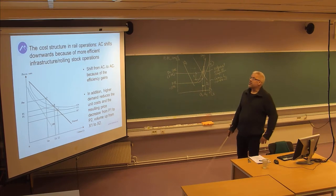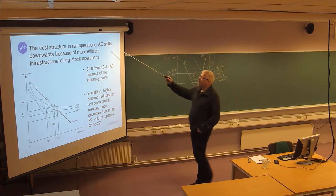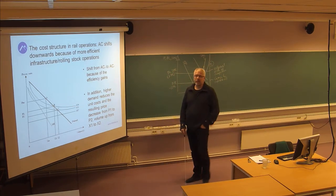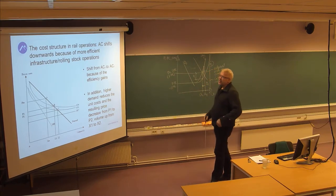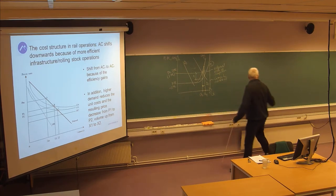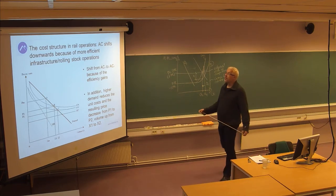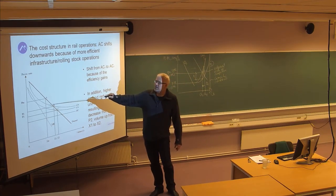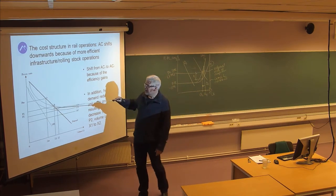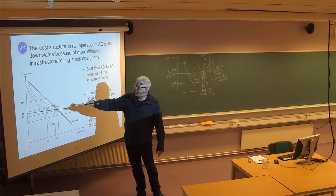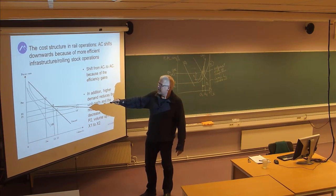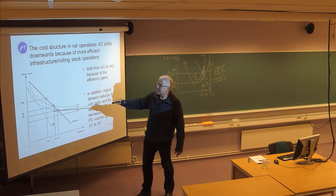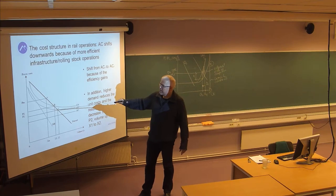The cost structure in rail operations: AC stands for average costs, and average costs may shift downward because of more efficient infrastructure, rolling stock, and operations. When you become more efficient, you use the infrastructure more efficiently and the average cost per unit is reduced from AC0 to AC1. The direct effect of that is that the price goes down from P1 to P2, because price equals average cost — before the efficiency improvement it's at this point, and after it's reduced to P2.